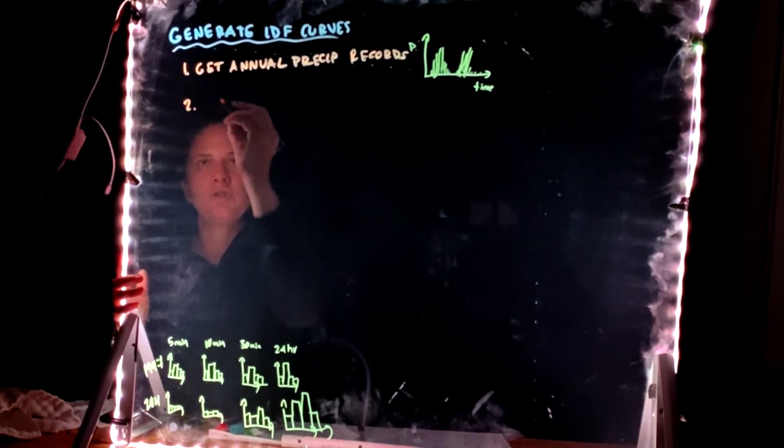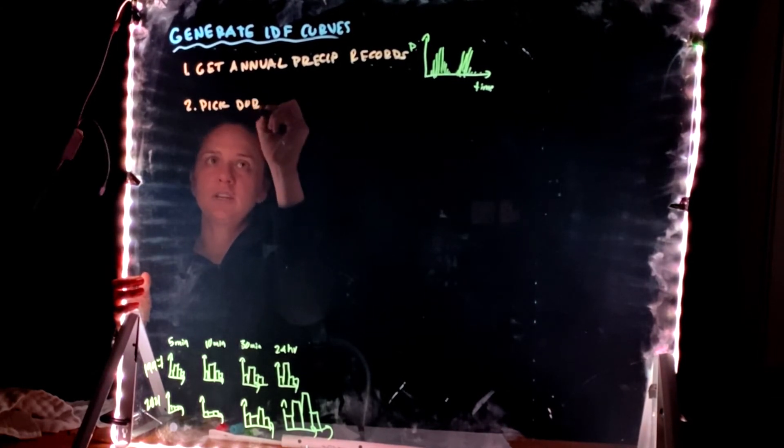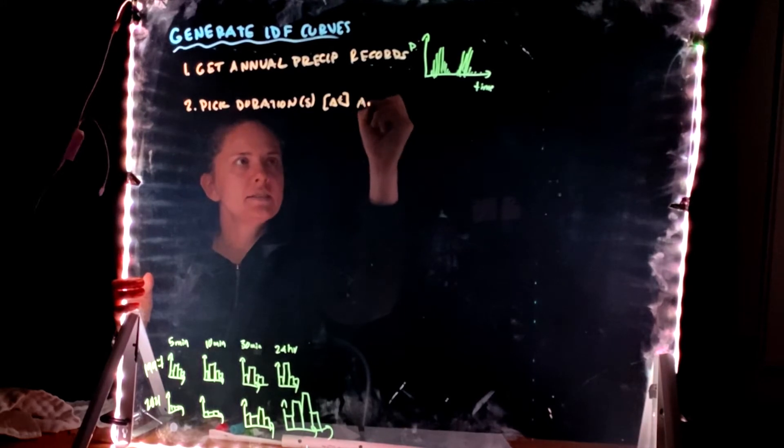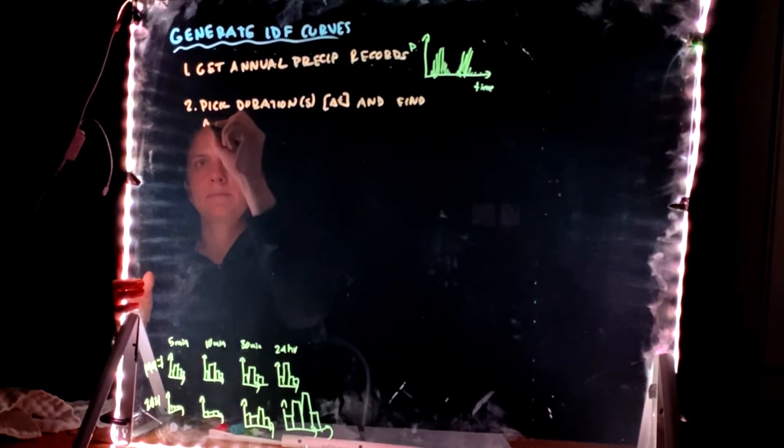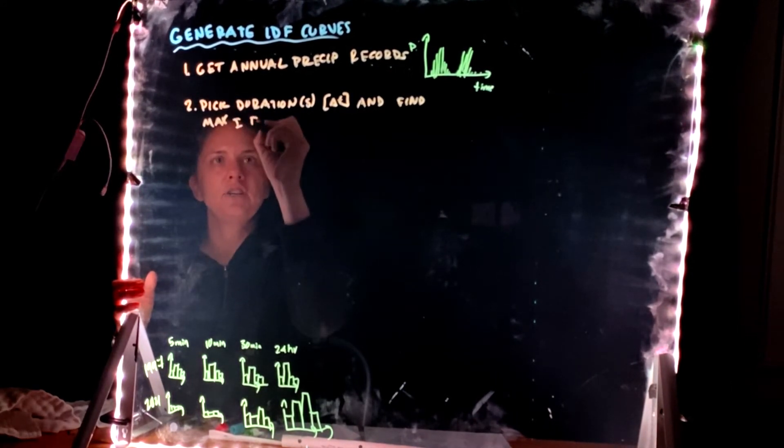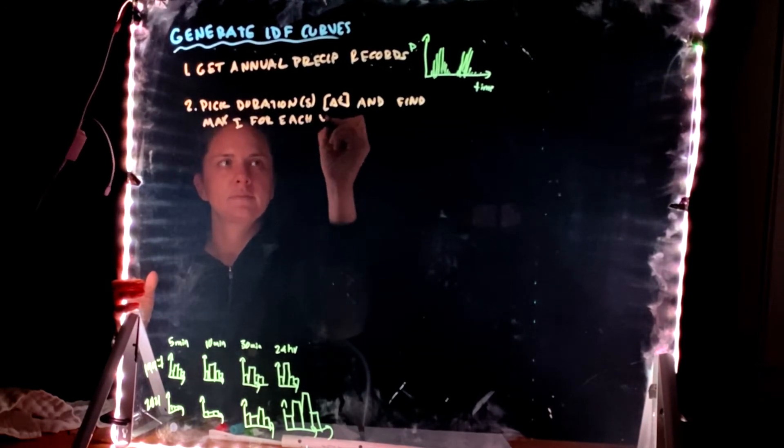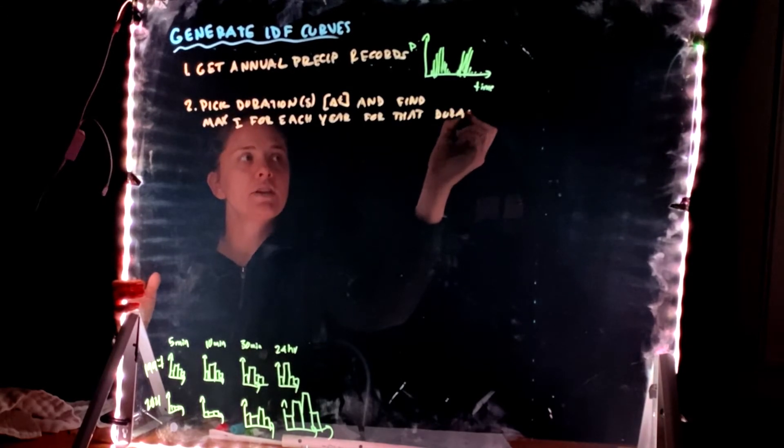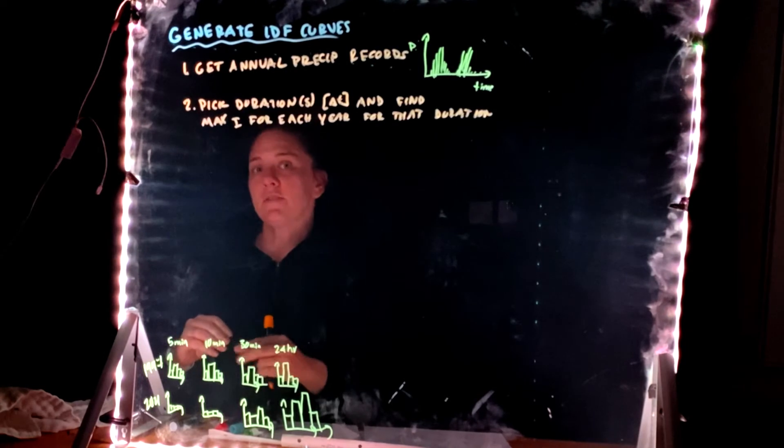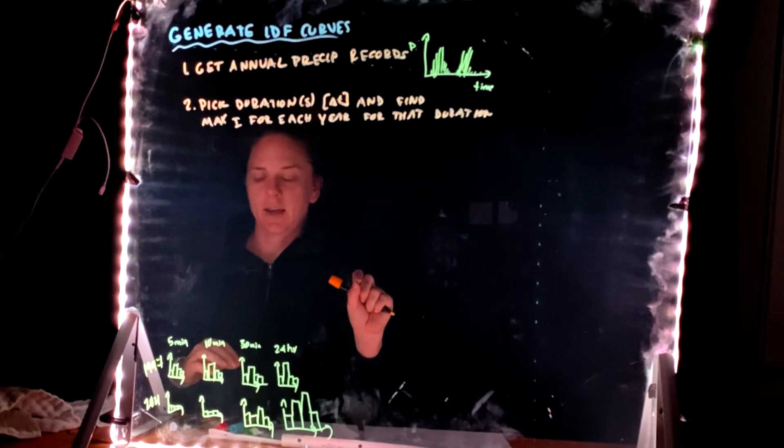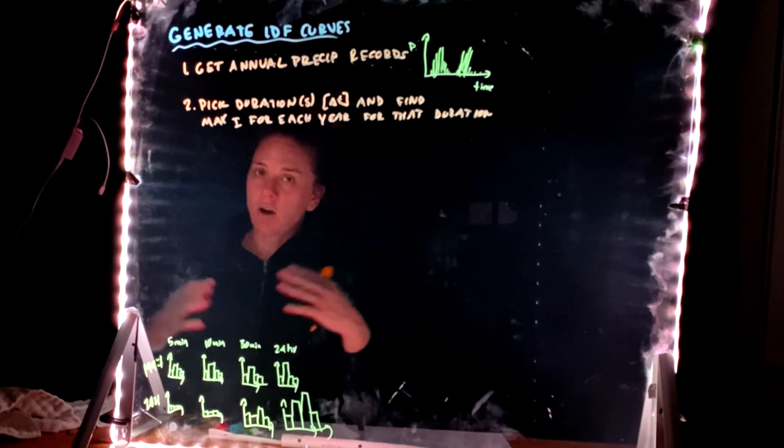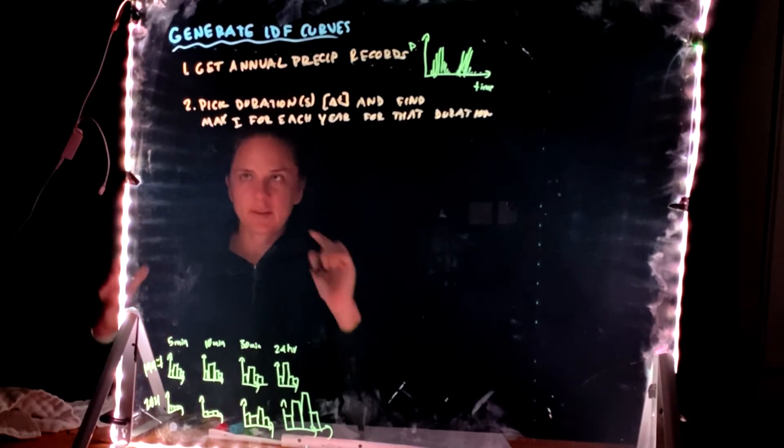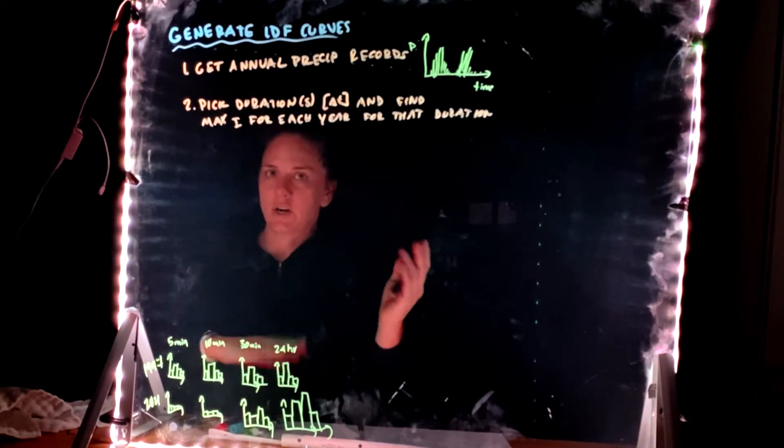So we're going to look up some gauge sites and we'll talk all about gauge sites coming up here. And you're going to basically generate time and precipitation. And it's going to look something like this. We have some dry months, then some more rain and so on. You're just going to get the data. That's the first step. Second step is going to be to pick the duration or durations. Usually you do this for multiple duration. We want delta t, we'll call this delta t and find the max i for each year for that duration.